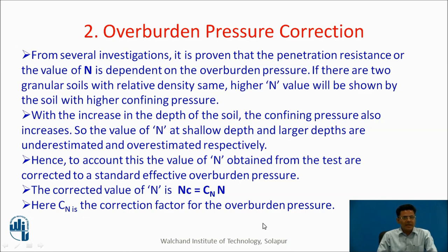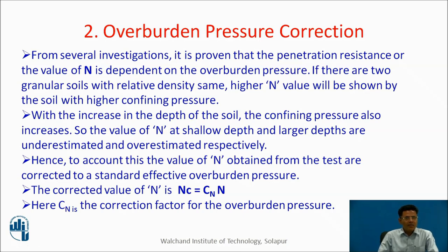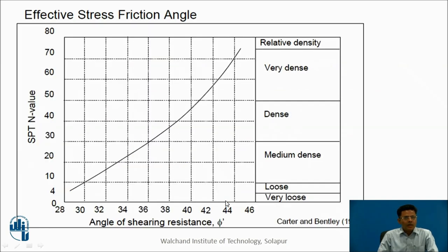From several investigations it is proven that the penetration resistance, or N value, is also dependent on overburden pressure. If two granular soils have the same relative density, the soil with higher confining pressure will show a higher N value. With increasing depth, confining pressure increases, so N values at shallow depths are underestimated and at larger depths are overestimated. To account for this, N values from the test are corrected to a standard effective overburden pressure. The corrected value is Nc = CN × N, where CN is the correction factor.